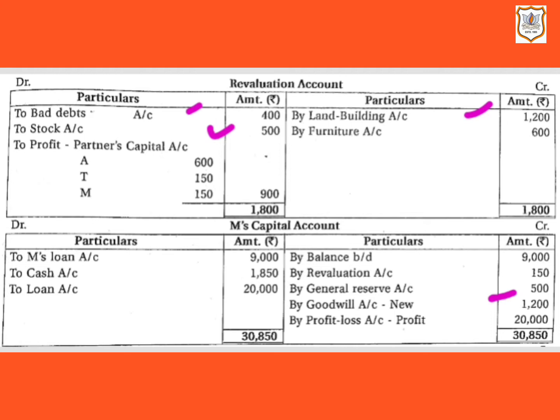The fifth point: M is to be given a share in profit till the date of his death on the basis of sales and net profit of the last year. Sales of last year were 8 lakh, sales of the first three months of the current year were 4 lakh, and net profit of last year was 2 lakh 40,000. We will calculate the profit of the deceased partner.